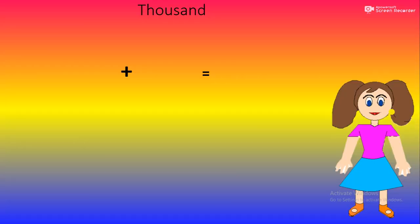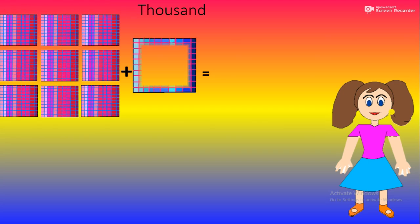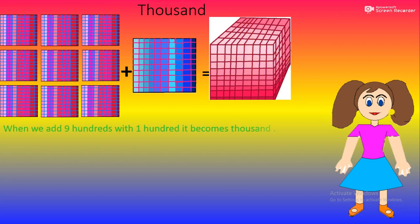When we add 900 with 100, it becomes 1000. Also, when 90 tenths is added to 10, it makes 1000.